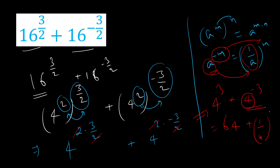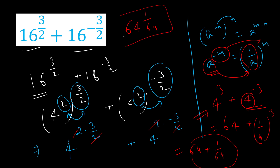From here we get 64 plus 1 upon 64. We can rewrite this as a mixed fraction: 64 and 1 by 64. This is our answer as a mixed number or mixed fraction.